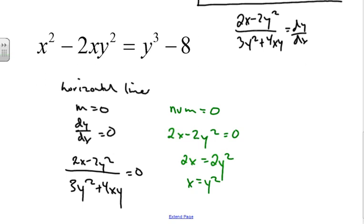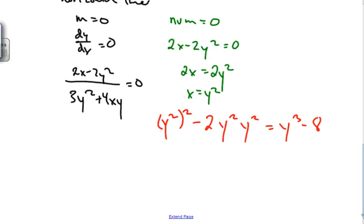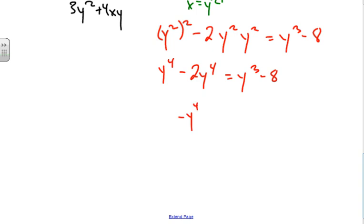Since we have two variables, we plug x equals y squared back into the original equation — not the derivative. Replacing every x with y squared gives us (y squared) squared minus 2(y squared)(y squared) equals y cubed minus 8. Simplifying: y to the fourth minus 2y to the fourth equals y cubed minus 8, which becomes negative y to the fourth equals y cubed minus 8. We set this equal to zero.